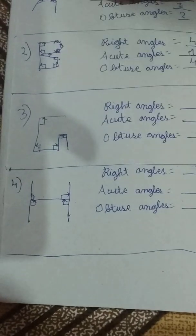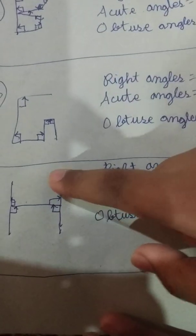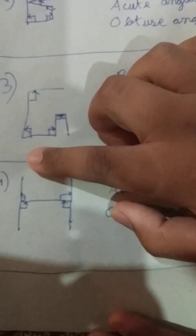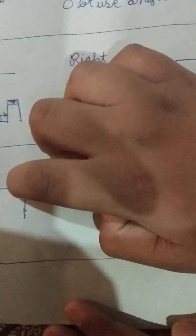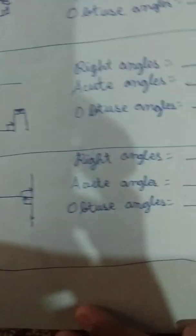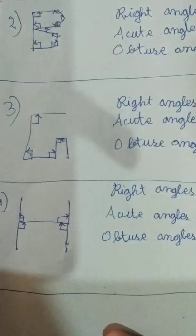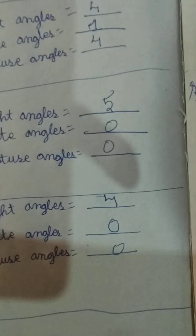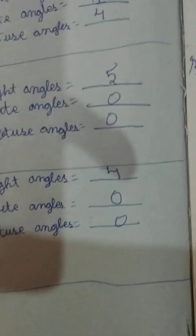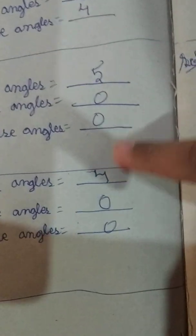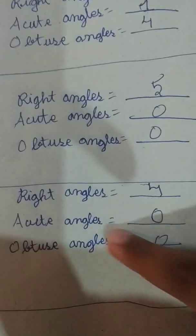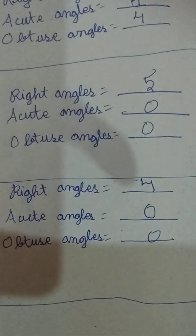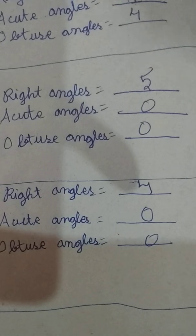Now let's see the H alphabet. How many right angles? One right angle, two right angles, three right angles, and four right angles. And there are no acute and obtuse angles in the H alphabet. Right angles: four; acute angles: zero; and obtuse angles: zero.